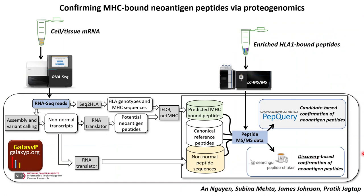That's where the bioinformatics comes into play. We have developed a Galaxy-based workflow where we take the RNA-seq data and the accompanying peptide-level mass spectrometry data from these enriched peptides and run them through two different workflows. One takes the RNA sequencing reads and uses various tools in Galaxy to predict the non-normal peptides potentially expressed and bound to the MHC complex. We then use a tool called PEP query to take these candidates and test whether the MS/MS peptide data shows any evidence for their presence in the sample — a candidate-based identification.